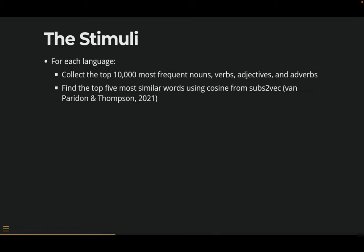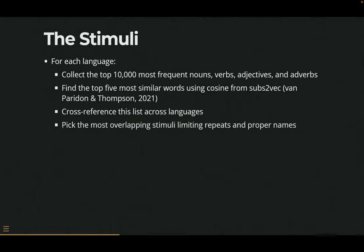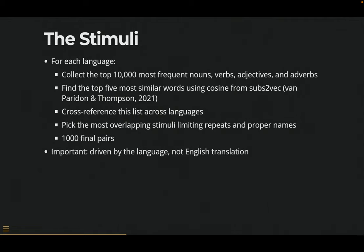From there we took the top five cosine values from Subs2Vec, which is a project that used the Open Subtitles project to build word2vec models of every language. From those word2vec outputs you can find the most similar words — that's about 50,000 pairs in each language separately. Then you cross-reference them using Google Translate — it's about 1.2 million pairs — and you pick the ones that overlap the most. The big important point: it's 1,000 final word pairs that are driven by language the way people language, not English. We didn't take English and then translate into everything else.